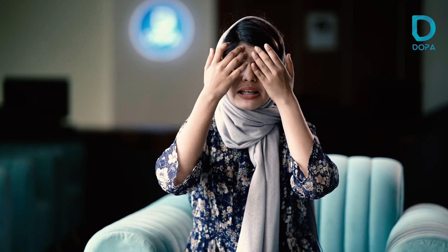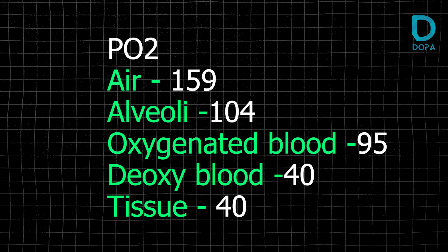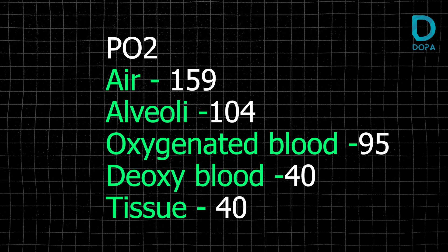If you look at this, we will learn more about the atmosphere of oxygen. The atmosphere is 100,000. In oxygenated blood, it is 95 mmHg. The deoxygenated blood is 40 mmHg.